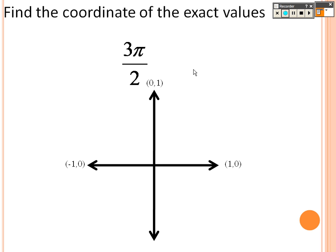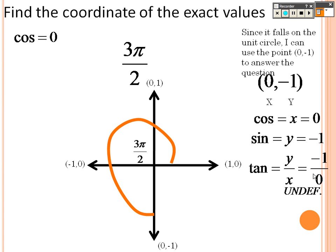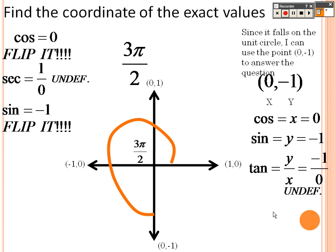3π over 2 lands right here, which is 0, negative 1. Because that's 3π over 2. So since it falls on 0, negative 1, and that's on the unit circle, x is cosine, y is sine. So cosine is 0. Sine is negative 1. Tangent is negative 1 over 0, which can't happen, so it's undefined. Cosine is 0. So you flip that to find secant, which is 1 over 0, but that's undefined. Sine is negative 1. When you flip that, you're still going to get negative 1. Tangent is negative 1 over 0, but when you flip that, you're actually going to get that cotangent is 0.